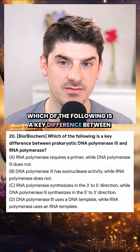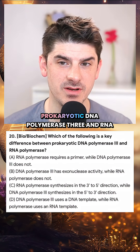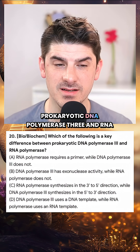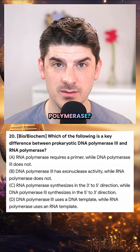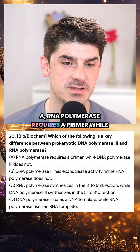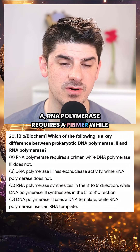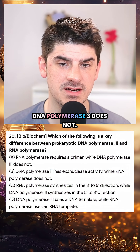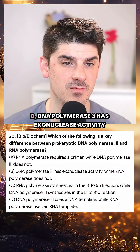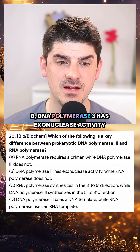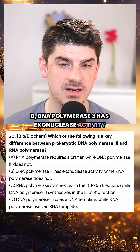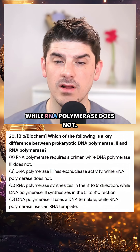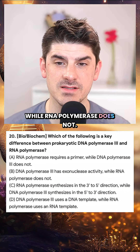Which of the following is a key difference between prokaryotic DNA polymerase 3 and RNA polymerase? A. RNA polymerase requires a primer while DNA polymerase 3 does not. B. DNA polymerase 3 has exonuclease activity while RNA polymerase does not.